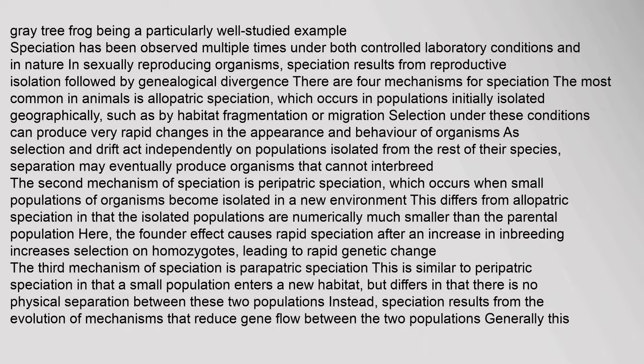Finally, in sympatric speciation, species diverge without geographic isolation or changes in habitat. This form is rare since even a small amount of gene flow may remove genetic differences between parts of a population. Sympatric speciation in animals generally requires the evolution of both genetic differences and non-random mating to allow reproductive isolation to evolve. One type of sympatric speciation involves crossbreeding of two related species to produce a new hybrid species. This is not common in animals as animal hybrids are usually sterile, because during meiosis the homologous chromosomes from each parent are from different species.